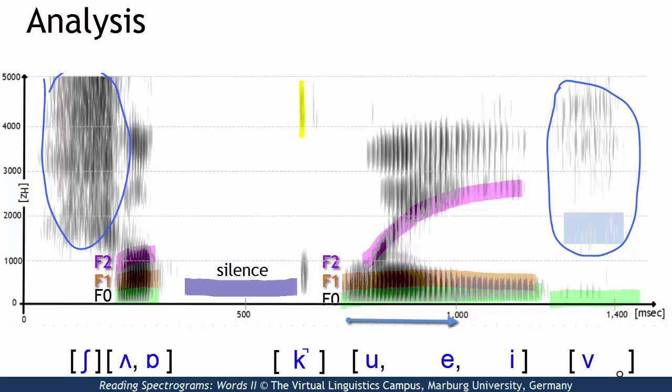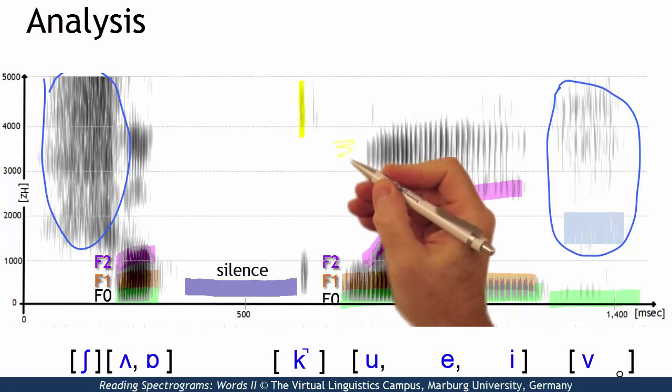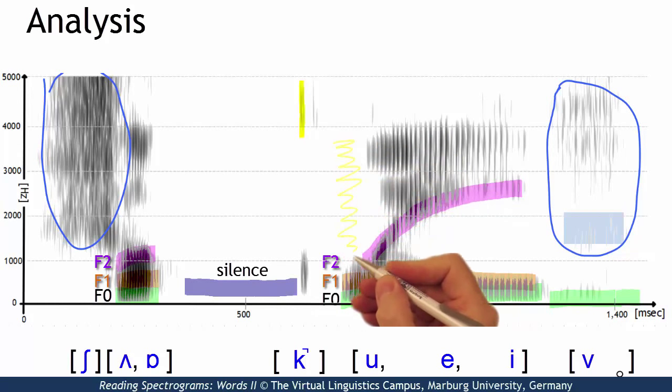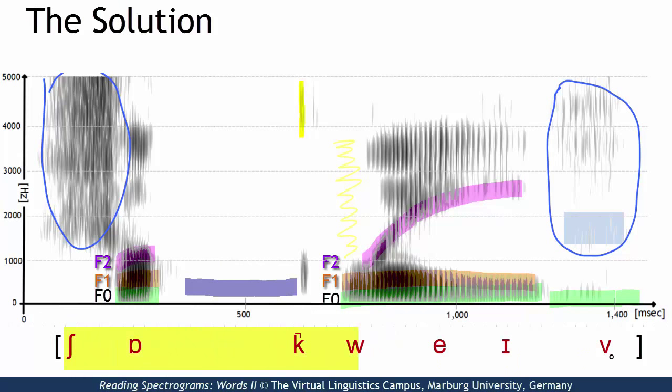U, E and E. However, since the first part starts with no significant formant structure, but involves some friction noise, it must be the labiovelar approximant W instead of U. So, this is the solution. Shock wave.